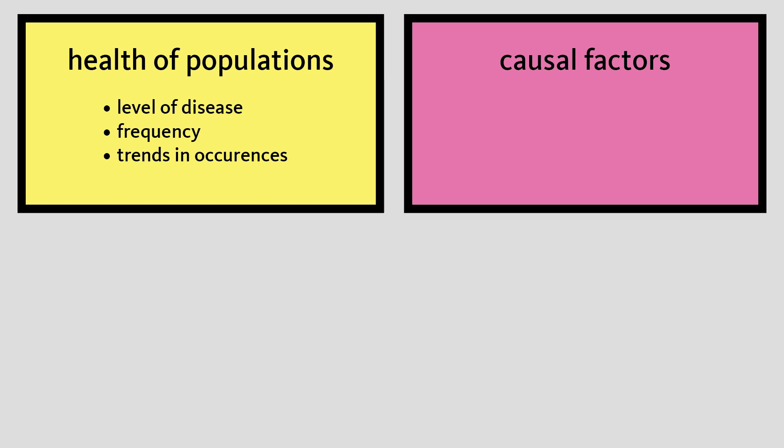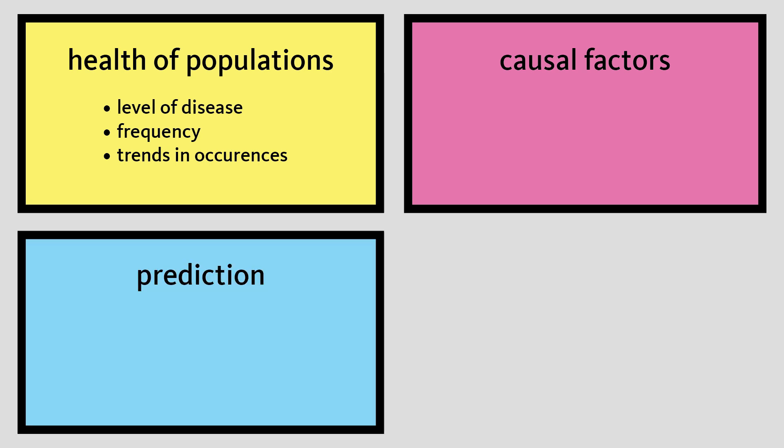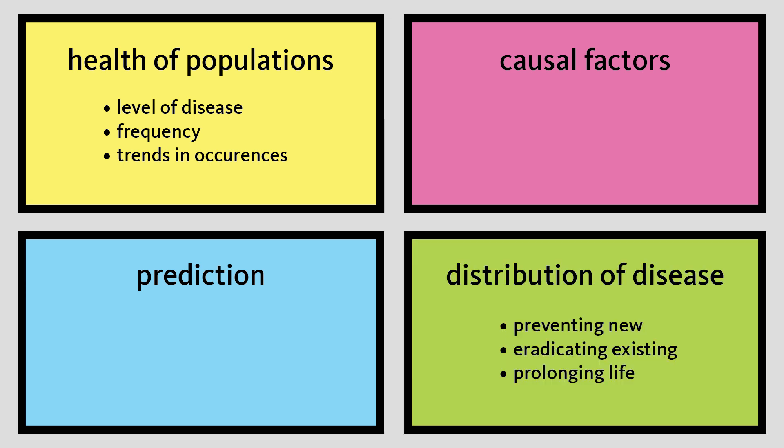Secondly, epidemiology has a goal of explaining etiology or discovering the causal factors in the occurrence of disease and modes of transmission. Epidemiology is also interested in disease prediction or forecasting of the frequency of disease in populations. Finally, epidemiology aims to control the distribution of disease by preventing new cases, eradicating existing cases, and prolonging the life of those with disease.